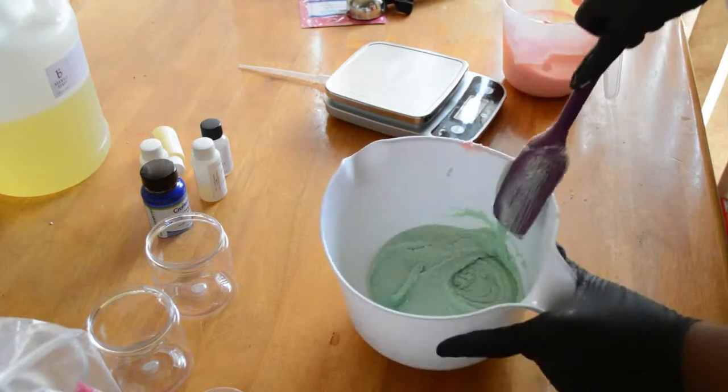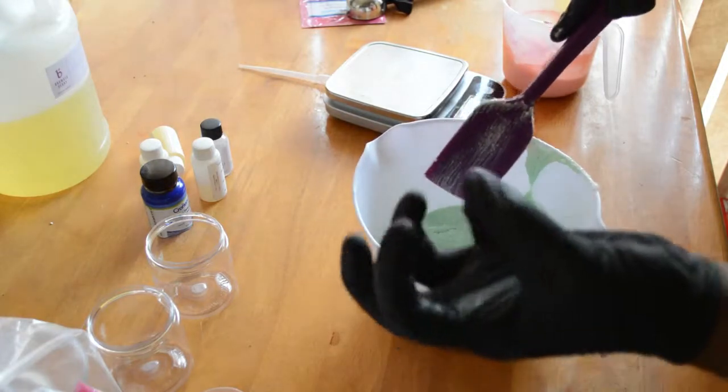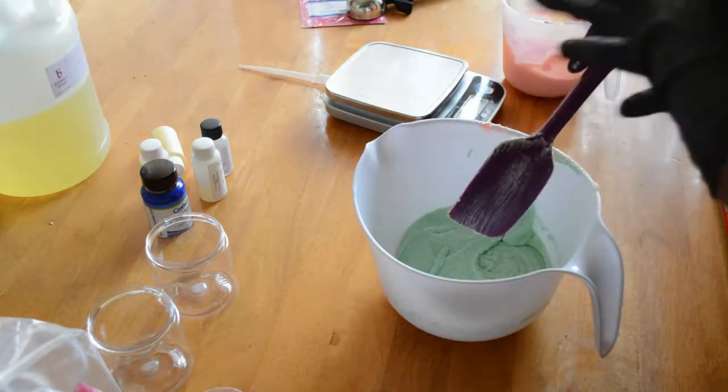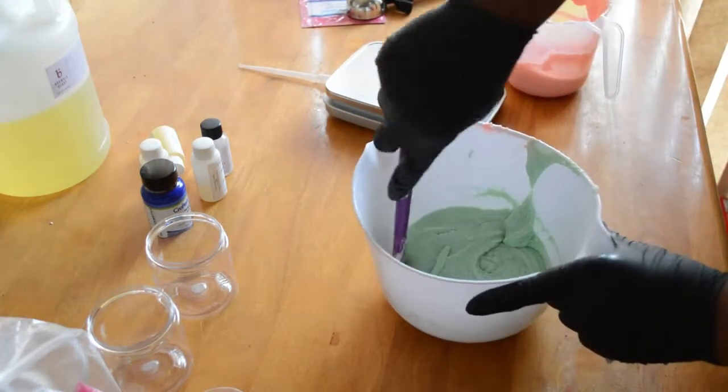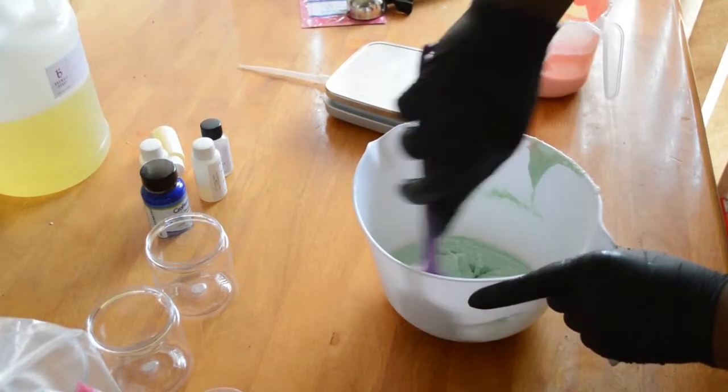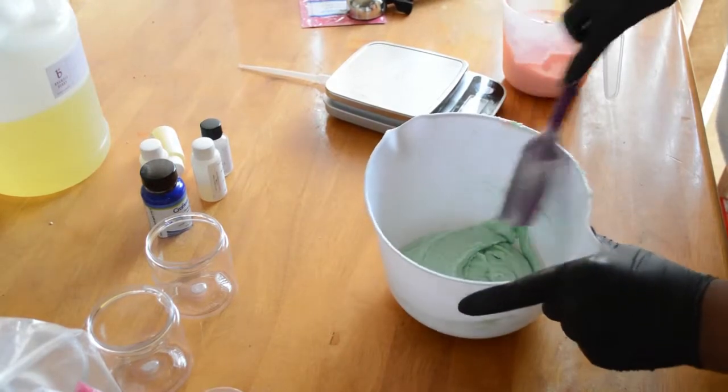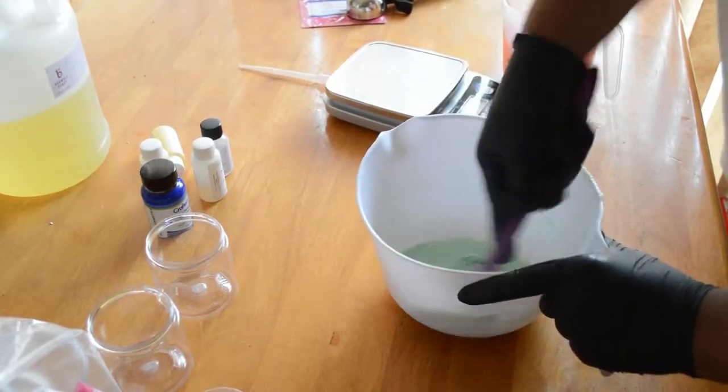And remember, this is enough sugar because once this all hardens up, it will become a thicker consistency. So if you keep adding sugar, it's going to get way too thick because the oils and the waxes have to still harden. So this is the perfect consistency. I will leave a recipe in the description as well.